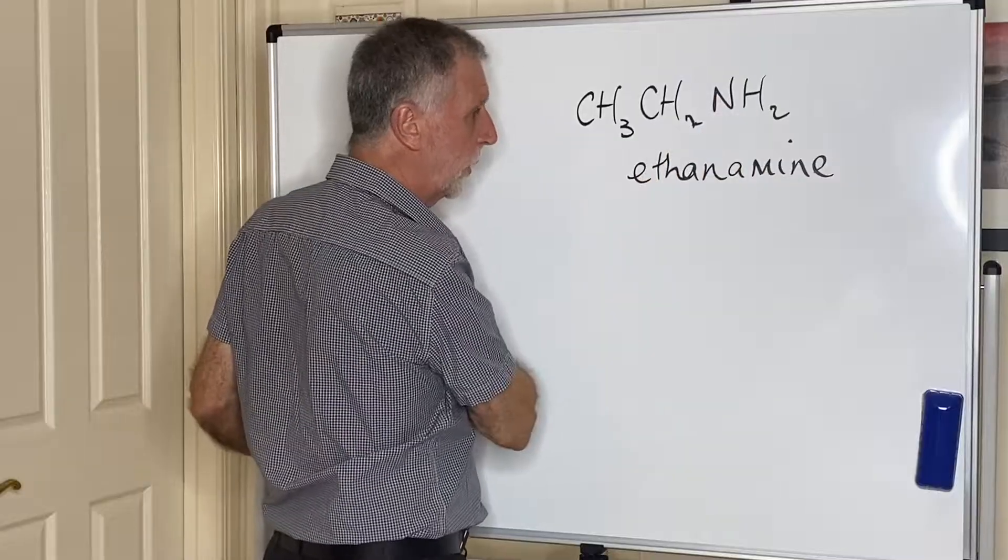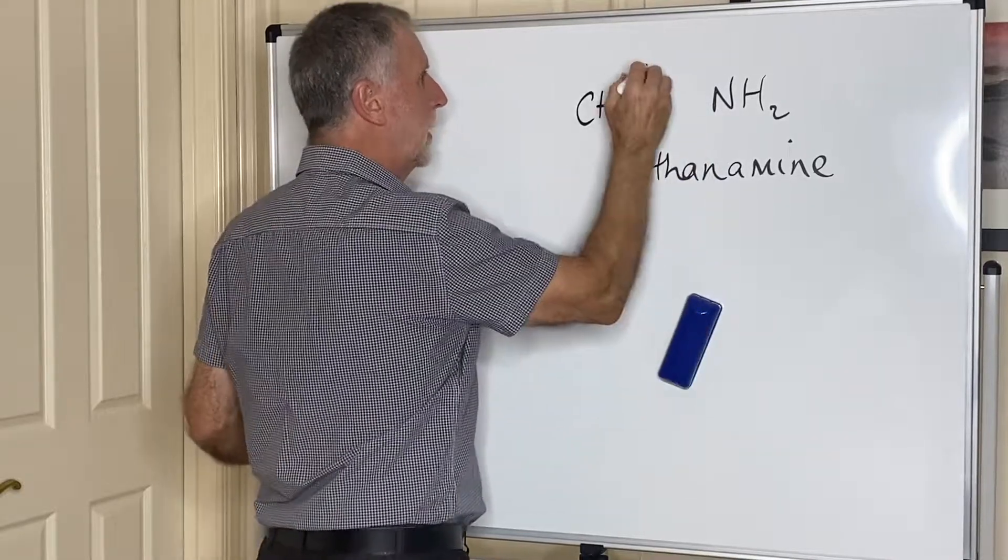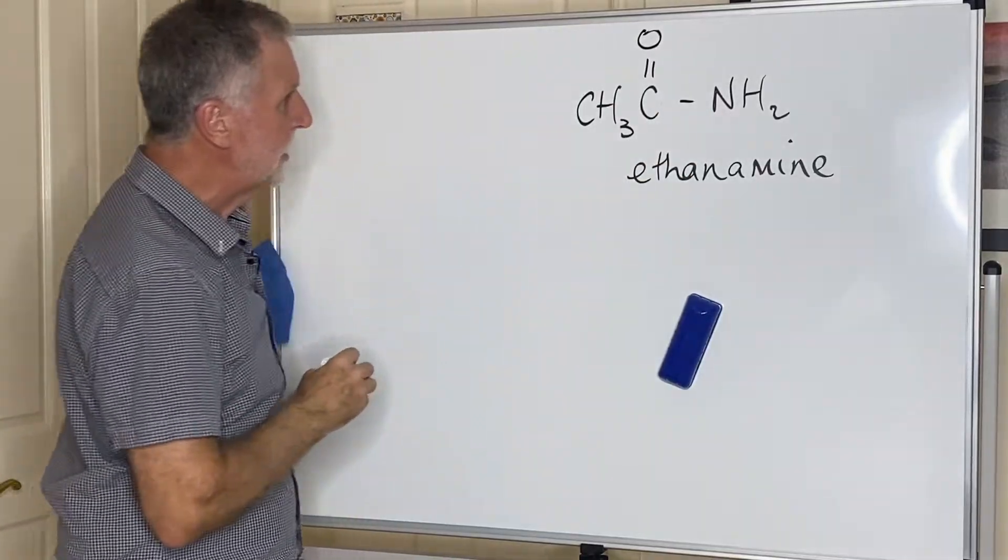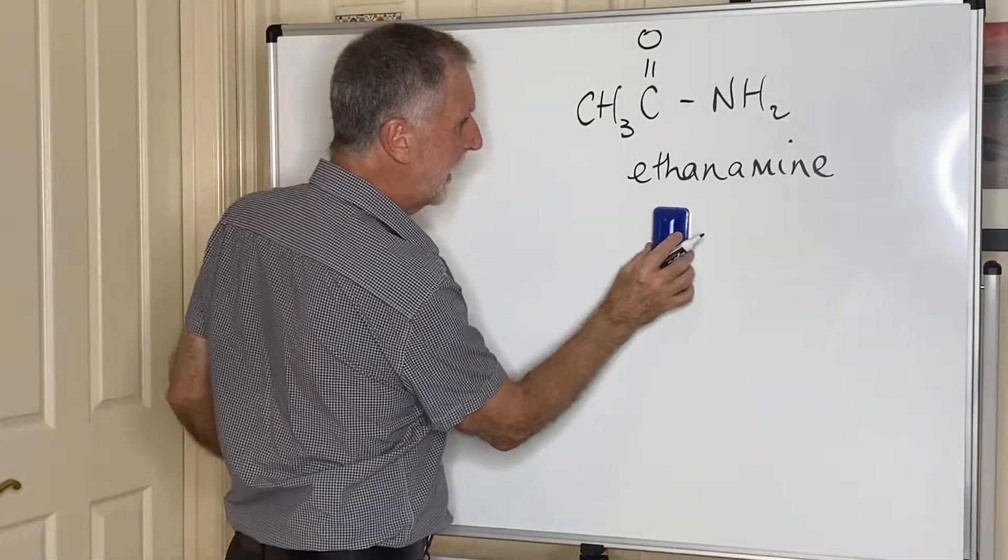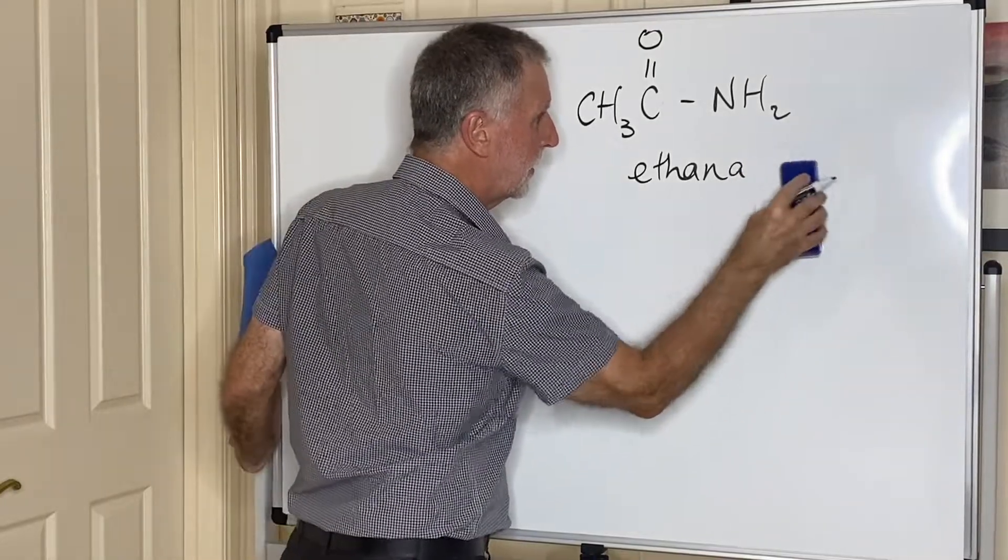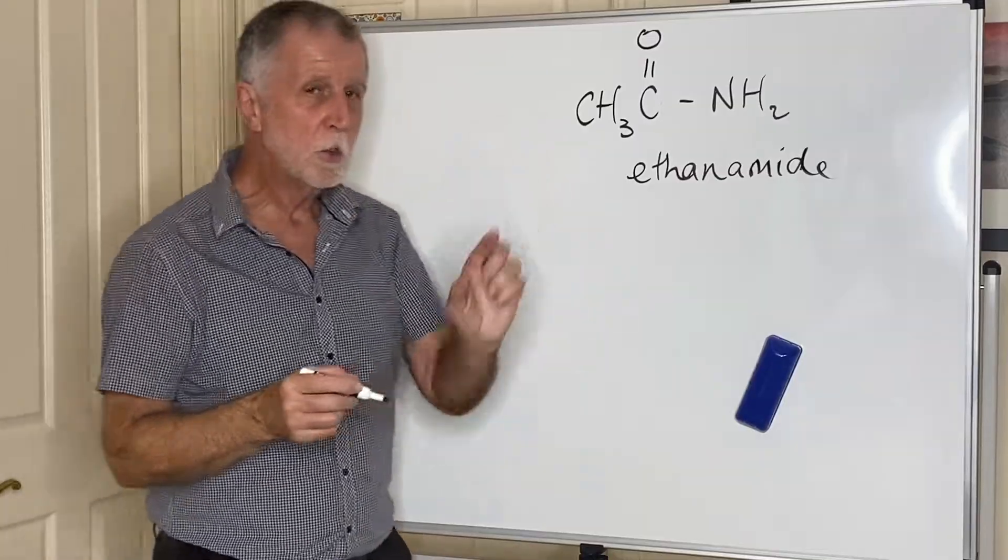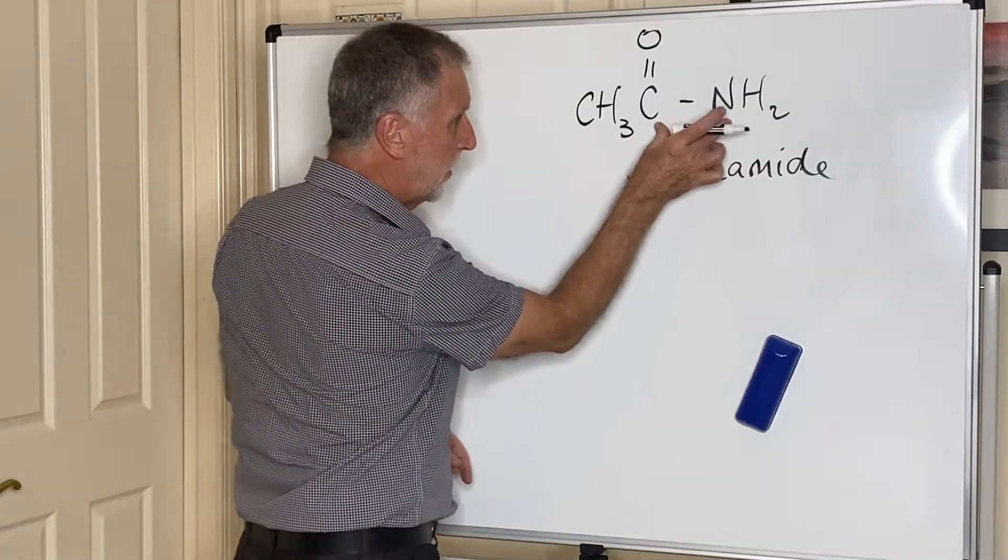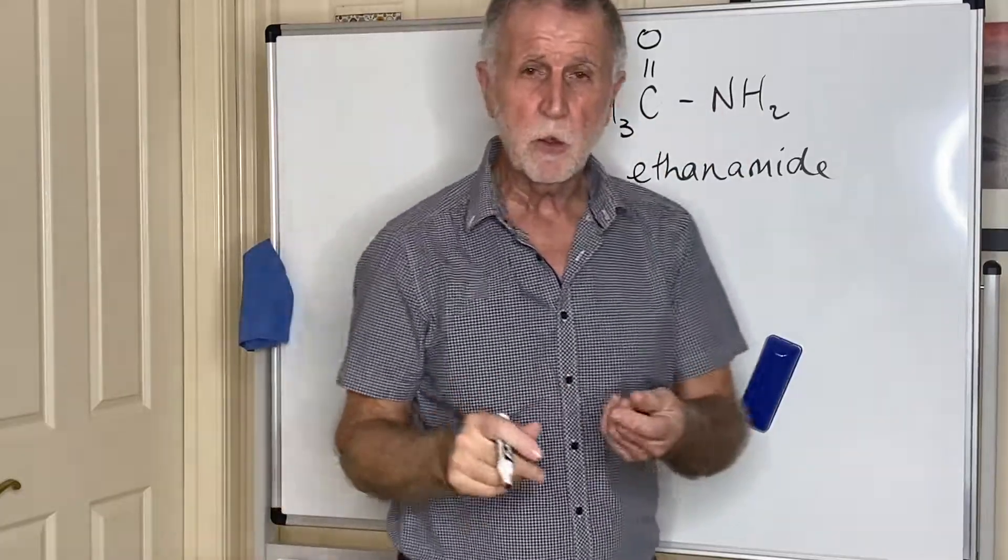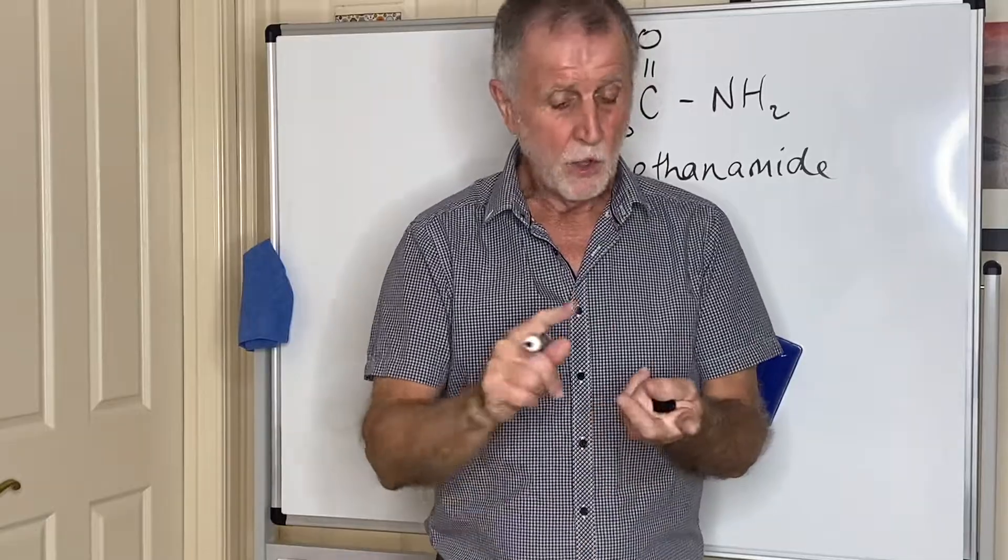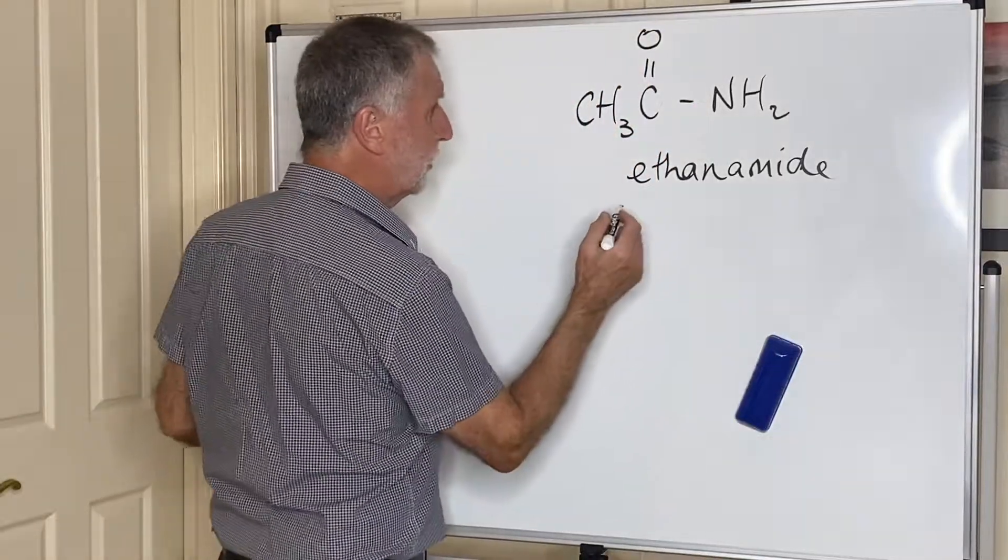If I put a double bond O and then attach the NH₂, I've turned the amine into an amide. Instead of ethanamine it becomes ethanamide. Now if you increase the number to three you don't need a number, it would still be propanamide because this group has to be on the very end, there's only one bond so it can't be in the middle of the chain. The same thing applies to carboxylic acids, you never need a number for them. Aldehydes you never need a number for them, they can only be the final carbon.